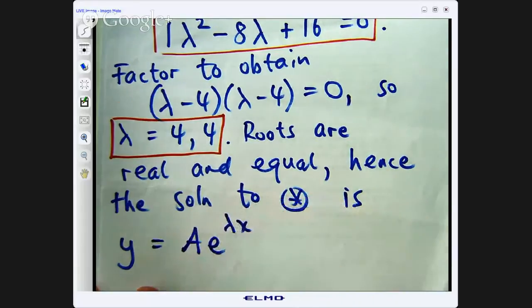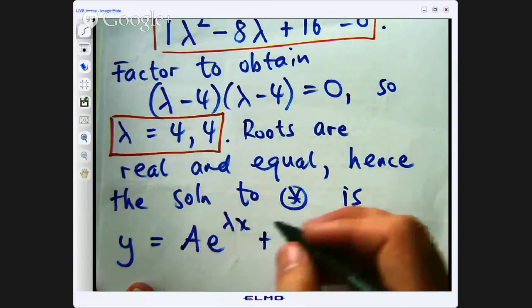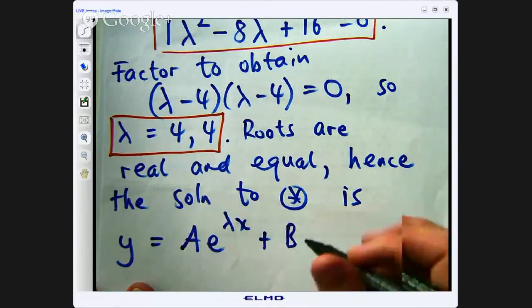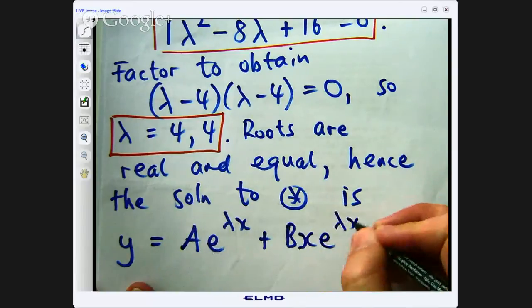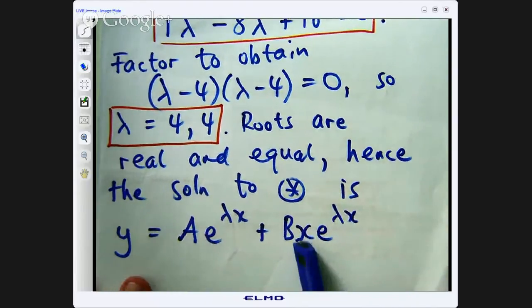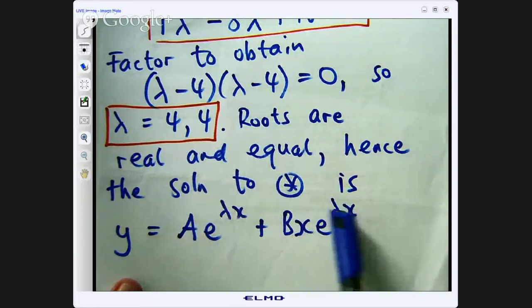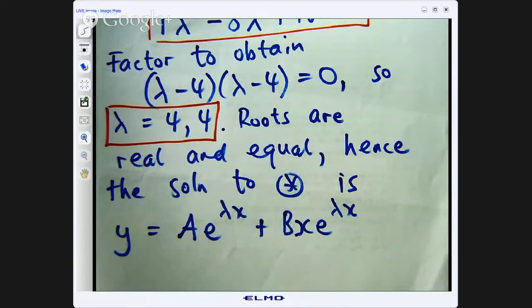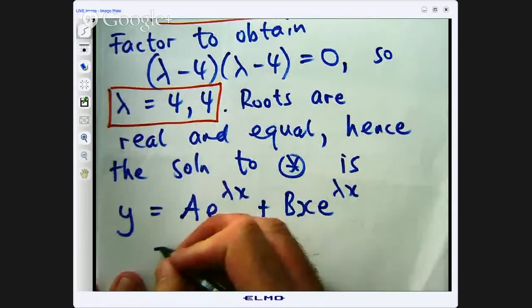So, we've still got an exponential, and a is going to be a constant here, but instead of having a b e to the lambda x, we have a b x e to the lambda x. So this x wasn't here in the previous case, and you'd have lambda 1 and lambda 2, where lambda 1 and lambda 2 are not equal. For this particular problem, lambda would be 4, so I'll put a 4 in there, a 4 in there, and then I'm finished.